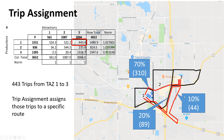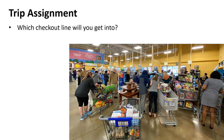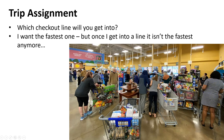Think of trip assignment like choosing a checkout line at the grocery store. You look at all the lines, check what's in each cart, assess the capacity and speed. You're always looking for the fastest route — that's what we want. You check the cashier speed, whether there are kids, whether someone has coupons. That's exactly the kind of analysis being done in trip assignment modeling.